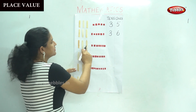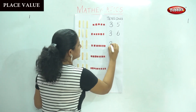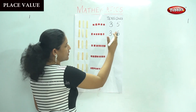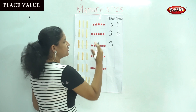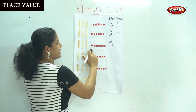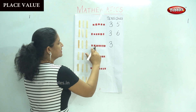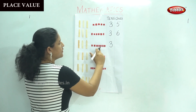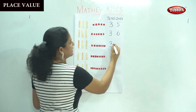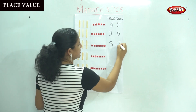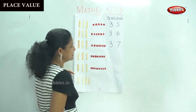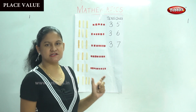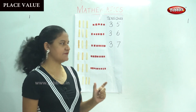The next: one, two, three, four, five, six, seven — seven ones, and the number is thirty-seven.